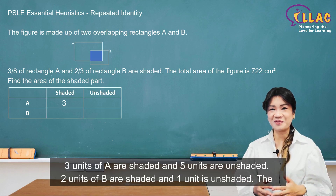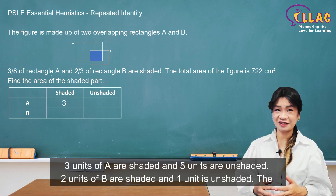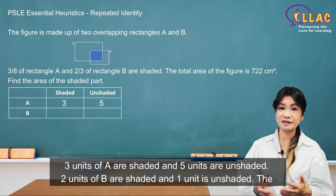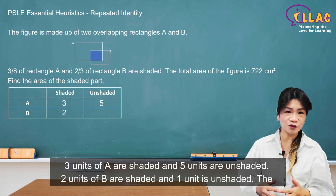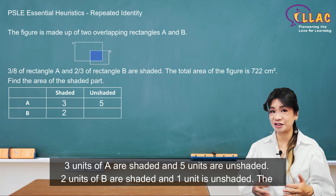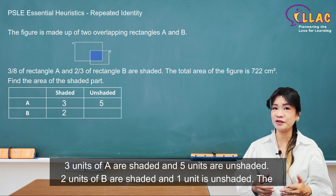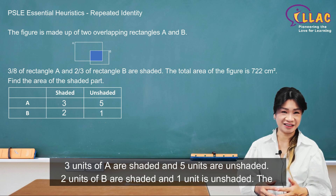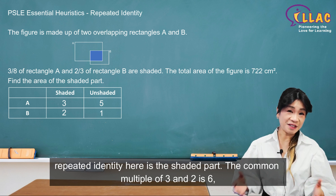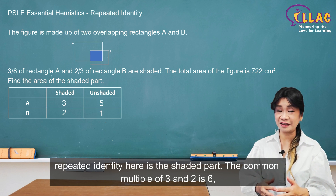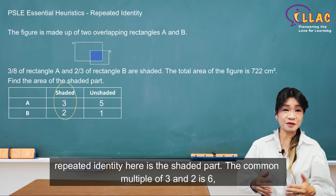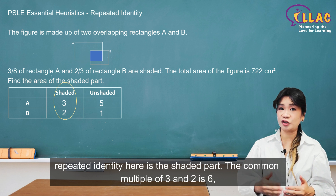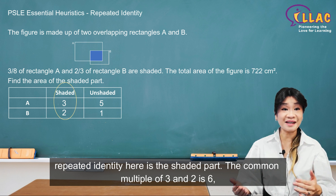3 units of A are shaded and 5 units are unshaded. 2 units of B are shaded and 1 unit is unshaded. The repeated identity here is the shaded part. The common multiple of 3 and 2 is 6.